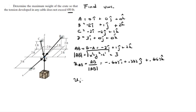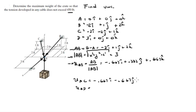Going through the same process, unit vector AC is -0.667i - 0.667j + 0.333k. Unit vector AD goes straight in the positive x direction, so it's simply +1i. The unit vector for the crate going straight down is simply -1k, because it's going straight down on the z-axis.